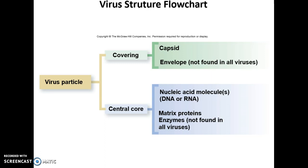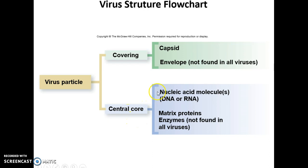A very basic virus structure flowchart: a virus particle can be divided into its covering — the exterior — which has two possible components. You have the capsid, and in some but not all viruses, you have the envelope. On the interior of that capsid is the central core, composed of nucleic acid — either DNA or RNA, never both — and sometimes some matrix proteins and enzymes, though not all viruses carry their own enzymes.